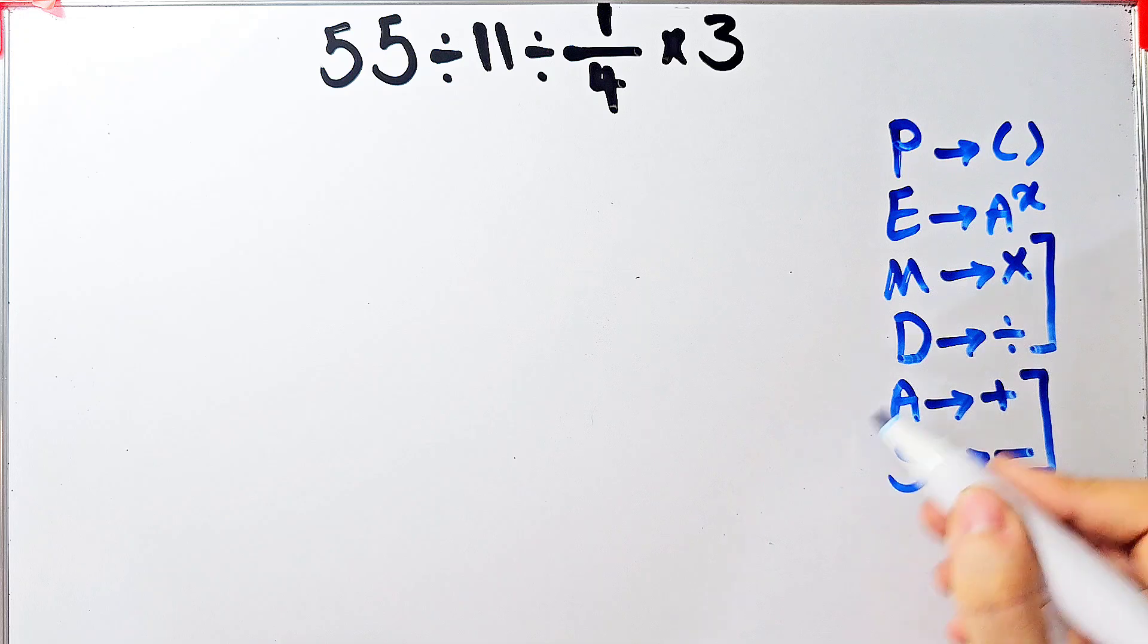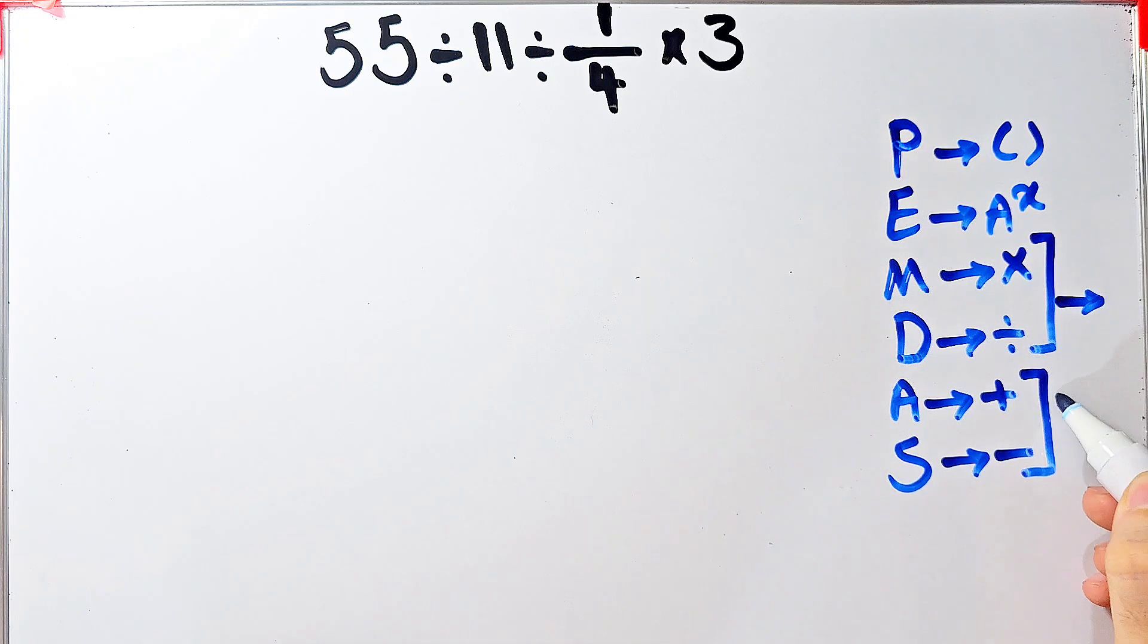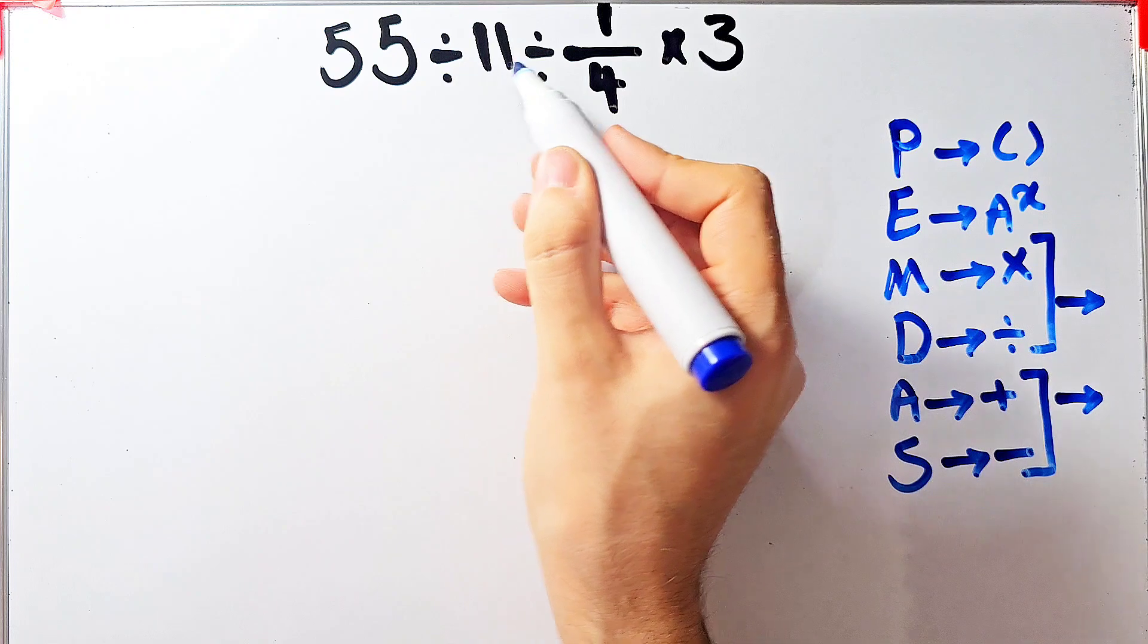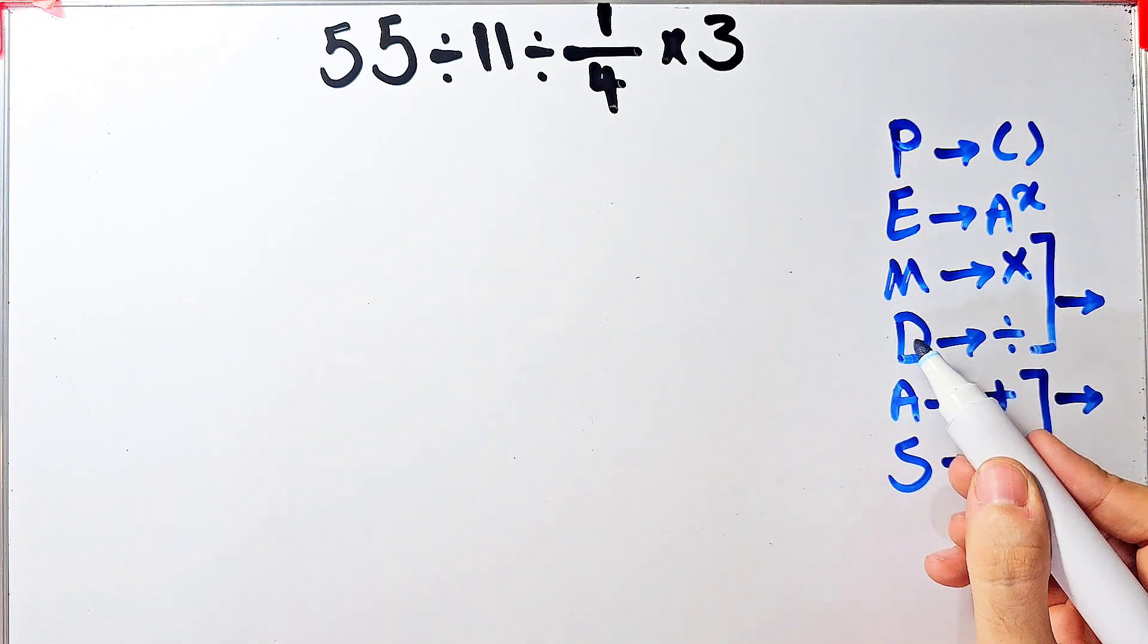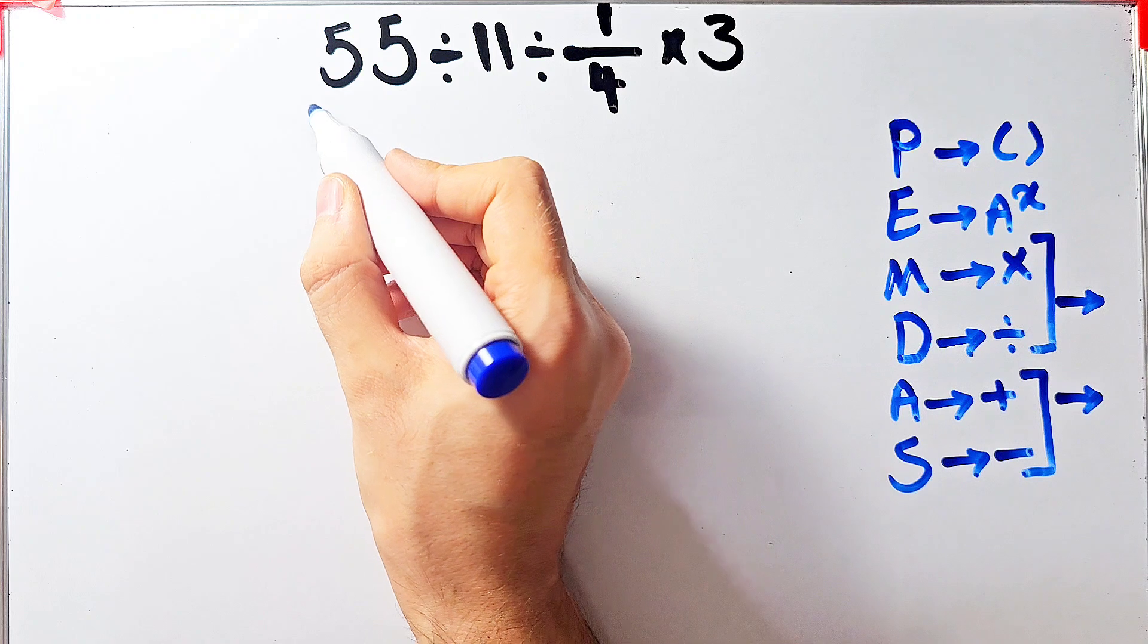When we have both in an expression, we start from the left and simplify the question. In this question we have division and multiplication. Because multiplication and division have the same level of priority, we start from the left and simplify the question.